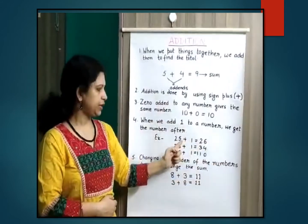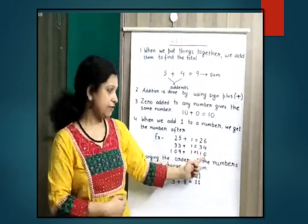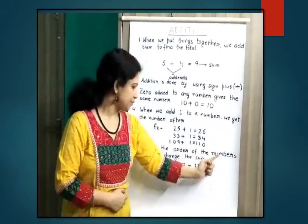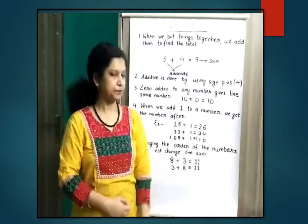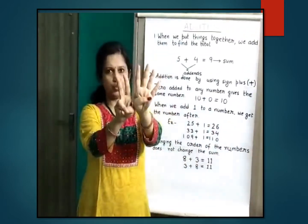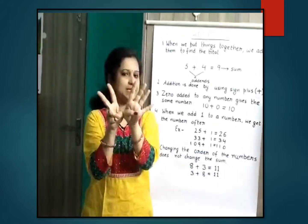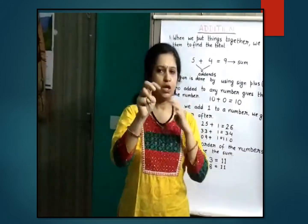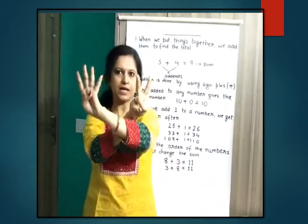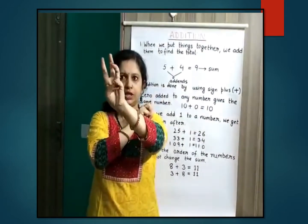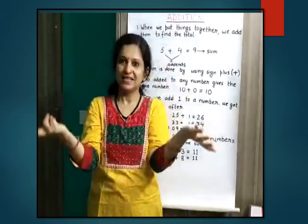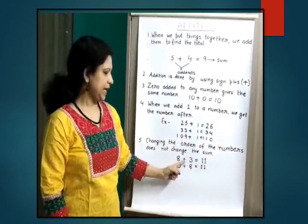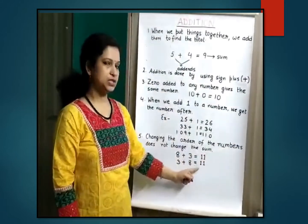Changing the order of numbers does not change the sum. Four plus two — count after four: five, six. Now reverse the numbers: two plus four — count after two: three, four, five, six. Same answer! So changing the order does not change the sum. For example, eight plus three is eleven, and three plus eight is also eleven.